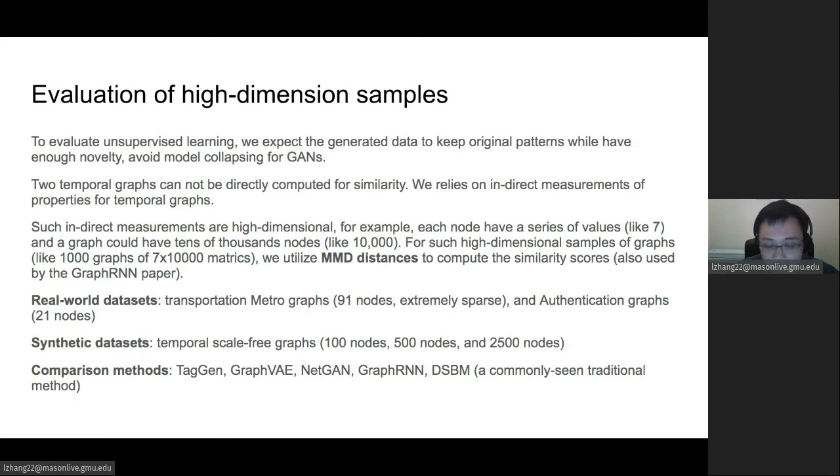In this work, we use real world datasets, which is 91 nodes for the transportation metro graphs, extremely sparse. Another is 21 nodes for authentication graphs. We also use synthetic datasets: temporal scale-free graphs which can simulate with 100 nodes, 500 nodes, and 2500 nodes. Comparison methods: we compare with TagGAN, GraphVAE, NetGAN, GraphRNN, and also a traditional method DSBM.